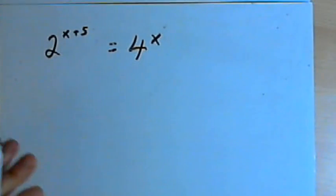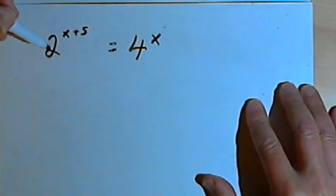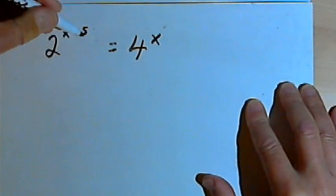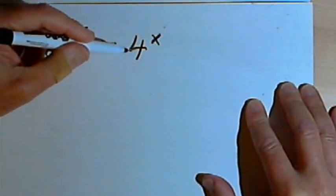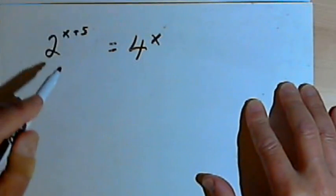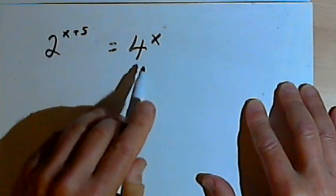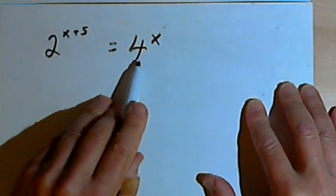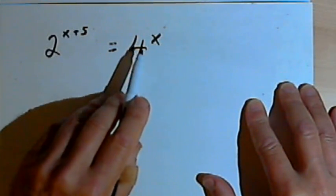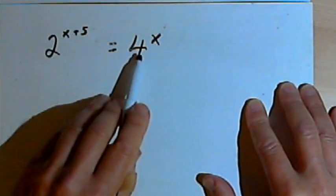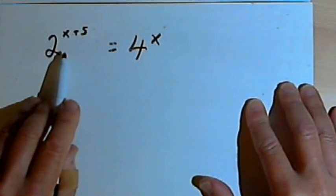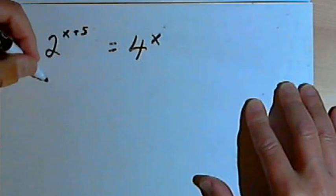So here's what this is about. We've got this problem 2 to the x plus 5 equals 4 to the x. The whole key in solving a problem like this is going to be in realizing that we could take a number like that 4 and turn it into 2 squared so we would have the same base on both sides of the equation. So let's do that and see how that works.